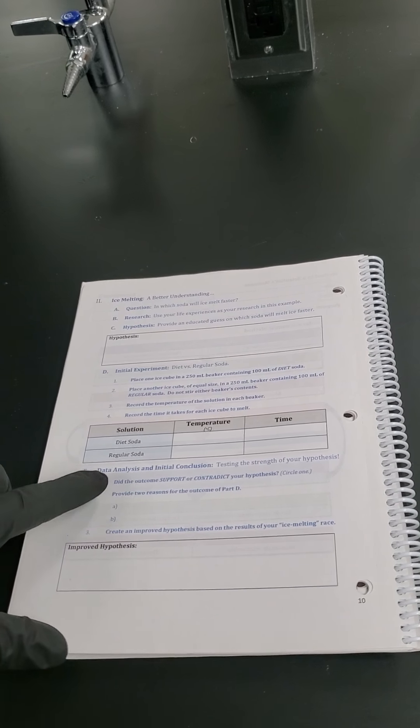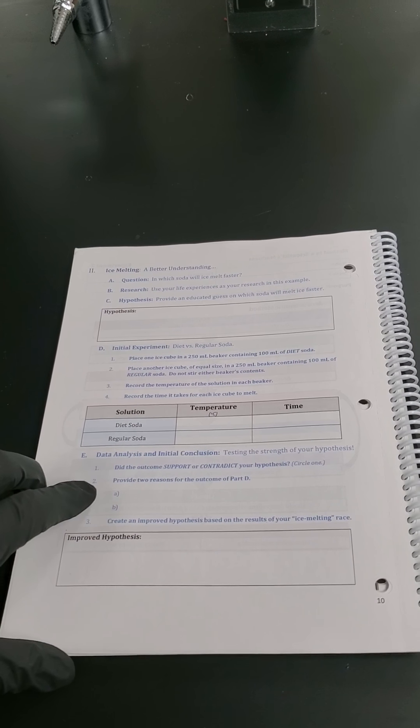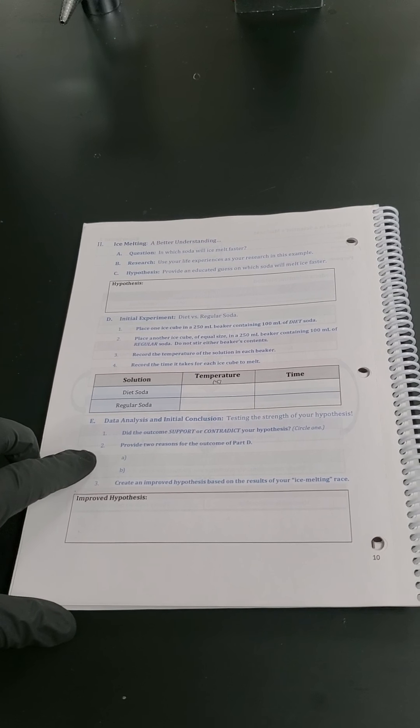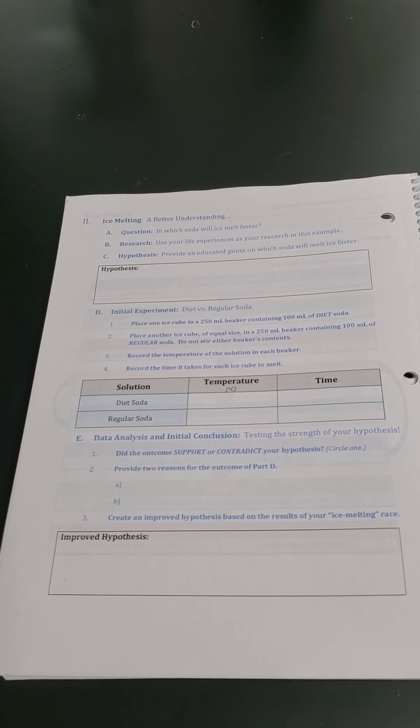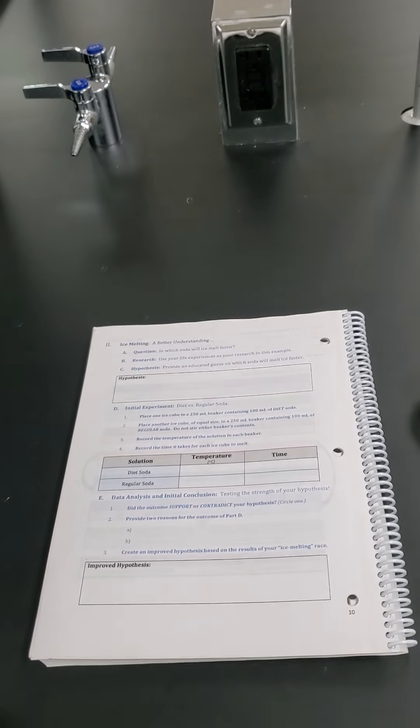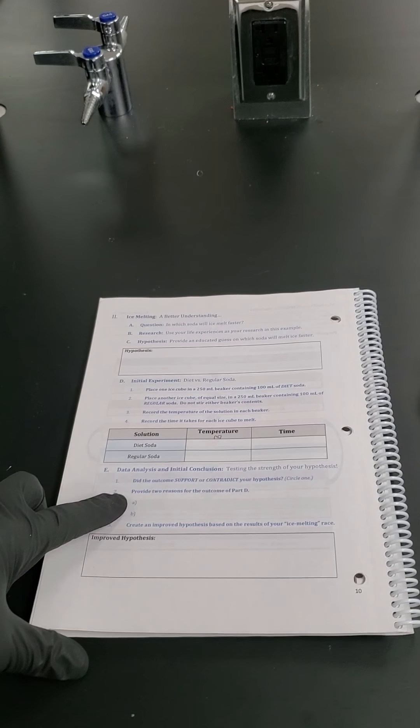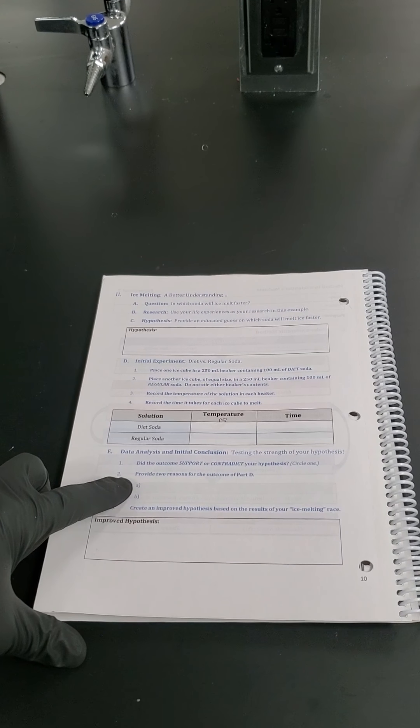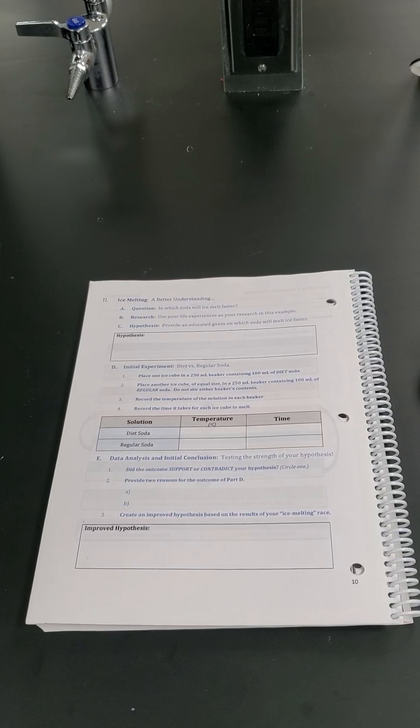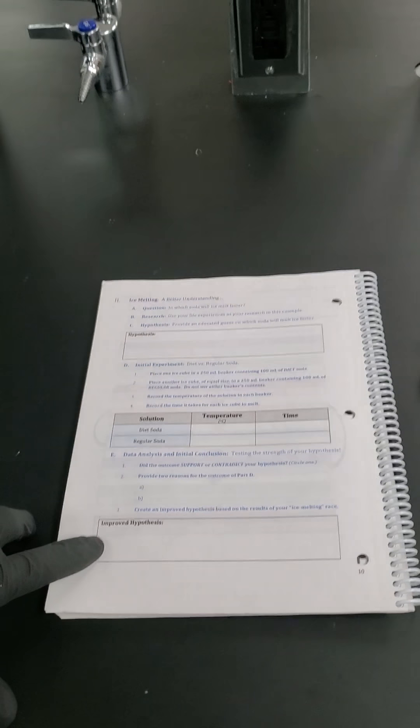Coming back to our lab book, we're going to have to think about: did our hypothesis, was it supported or contradicted based on our previous data? Once you've circled that, we're going to provide two reasons that you think might be the case. If you said diet was going to be faster, you're on the right track. If you said sugar was faster, now we know that the sugar of the regular was the opposite. But maybe you think it's some aspartame or maybe they put some extra salt or something.